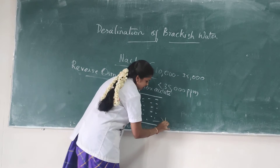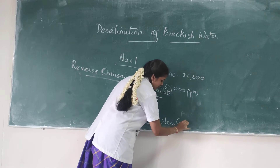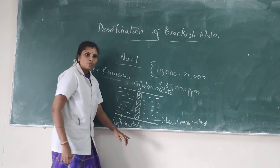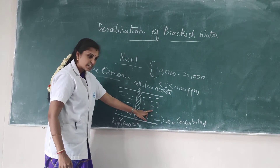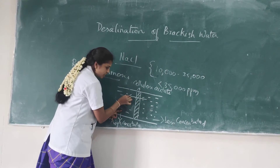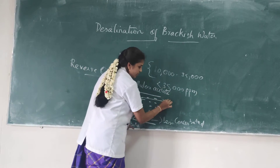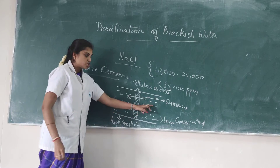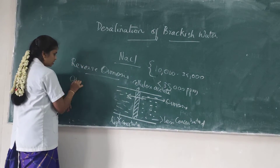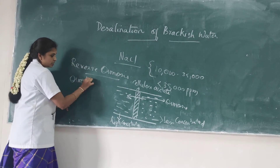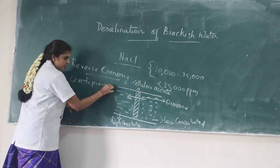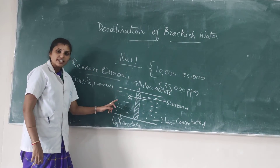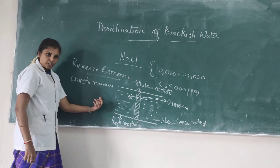When water flows from the less concentrated side to the highly concentrated side, this process is called osmosis, and the pressure involved in this flow of water — from the less concentrated side to the higher concentrated side — is called the osmotic pressure.